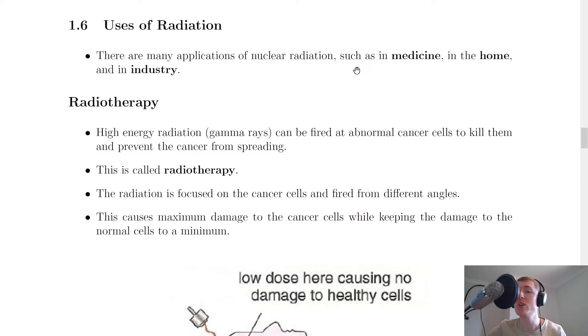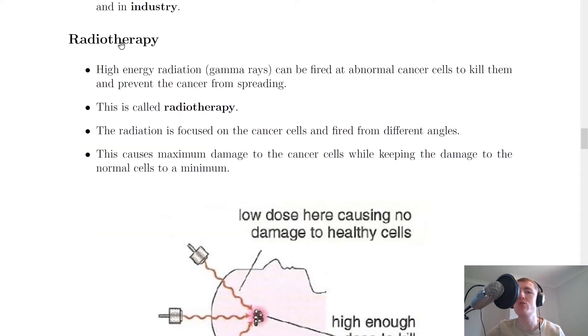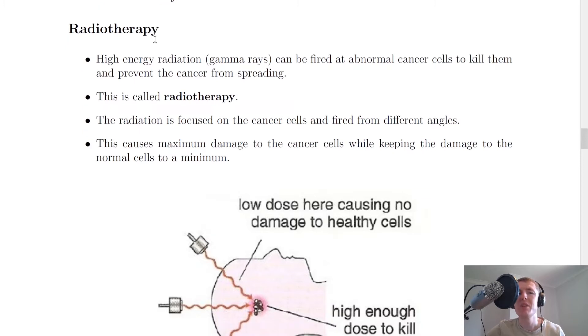We're going to look at three uses of radiation in medicine, one use of radiation in the home, and one use of radiation in industry. The first one is radiotherapy. High energy radiation, gamma rays, can be fired at abnormal cancer cells to kill them and prevent the cancer from spreading. This is called radiotherapy.